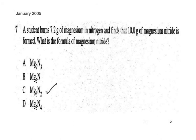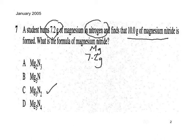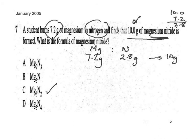The answer is C. We're reacting 7.2 grams of magnesium with an undefined mass of nitrogen to get a single product: 10 grams of magnesium nitride. Applying the law of conservation of mass, we can't create nor destroy mass. So the mass of nitrogen that reacts is the difference: 10.0 minus 7.2 equals 2.8 grams of nitrogen.